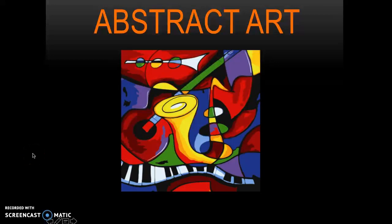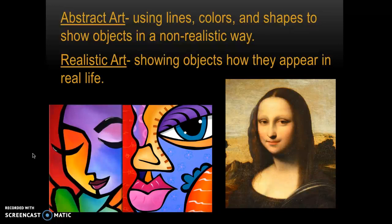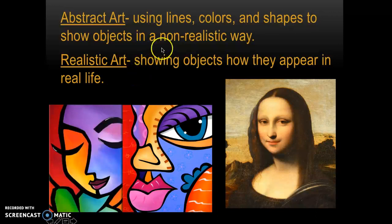Let's talk about abstract art. We've talked about abstract art a little bit before, but let's really look at the definition. Abstract art is using different types of lines, colors, and shapes to show objects or to show a picture that looks a non-realistic way. Non-realistic just means it looks like it does not mimic real life — it looks a little bit different from real life.